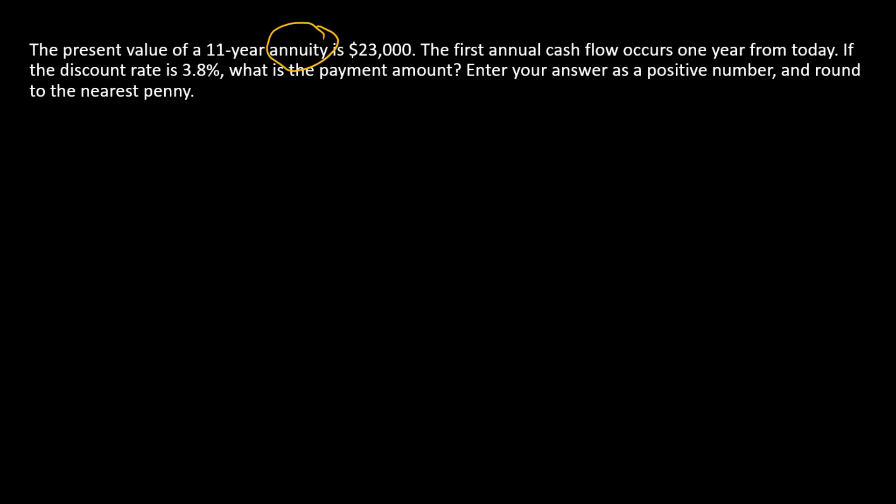We are not given the payment amount; we're actually trying to solve for that. We want to solve for the payment amount, so I'm going to call that C. We're given a present value of $23,000, so that's our PV.